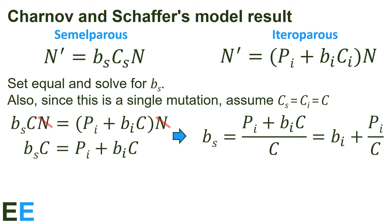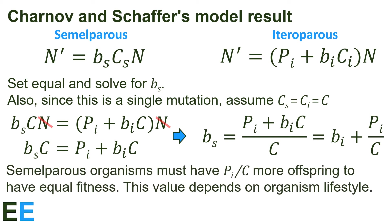Looking at our final equation, we see that semelparous organisms must have P sub I divided by C more offspring to have equal fitness, not just one like from before. The value of P sub I divided by C depends on the organism's lifestyle. Let's look at this equation in more detail.